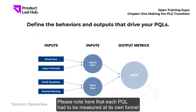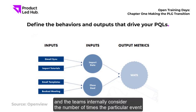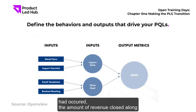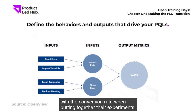Each PQL had to be measured at its own funnel. The teams internally considered the number of times the PQL event occurred, the amount of revenue closed, and the conversion rate when putting together their experiments.